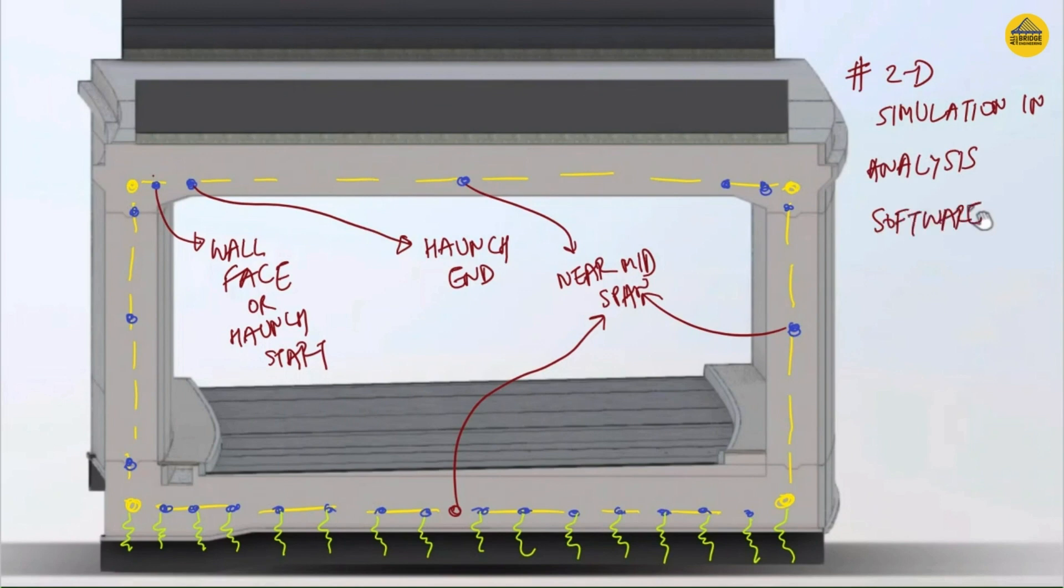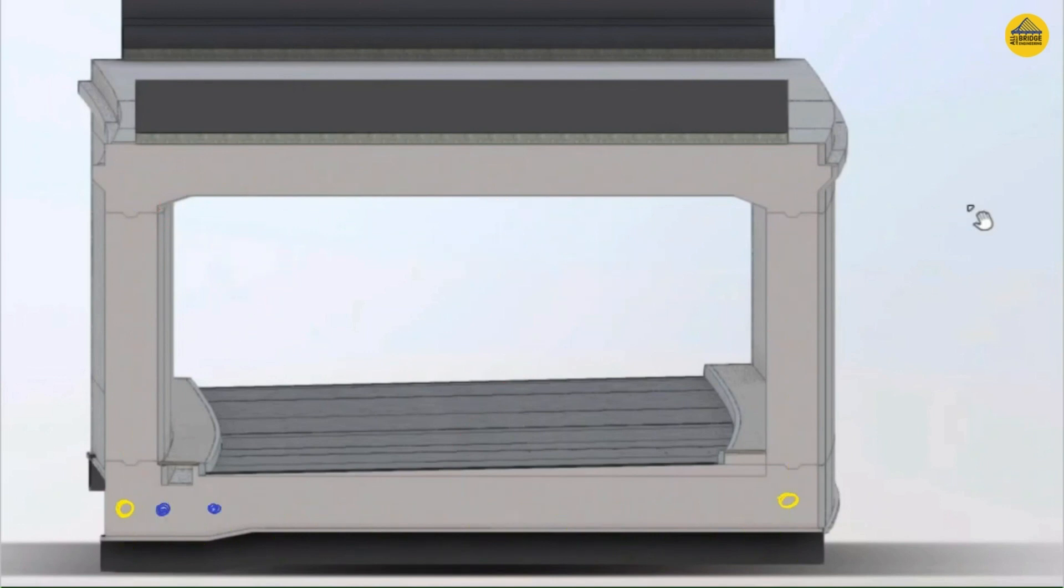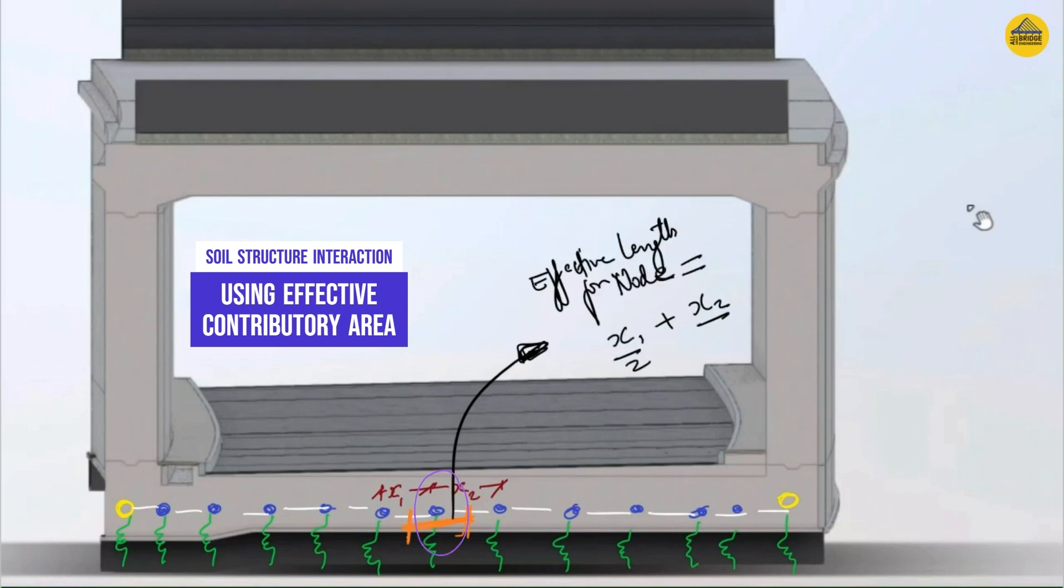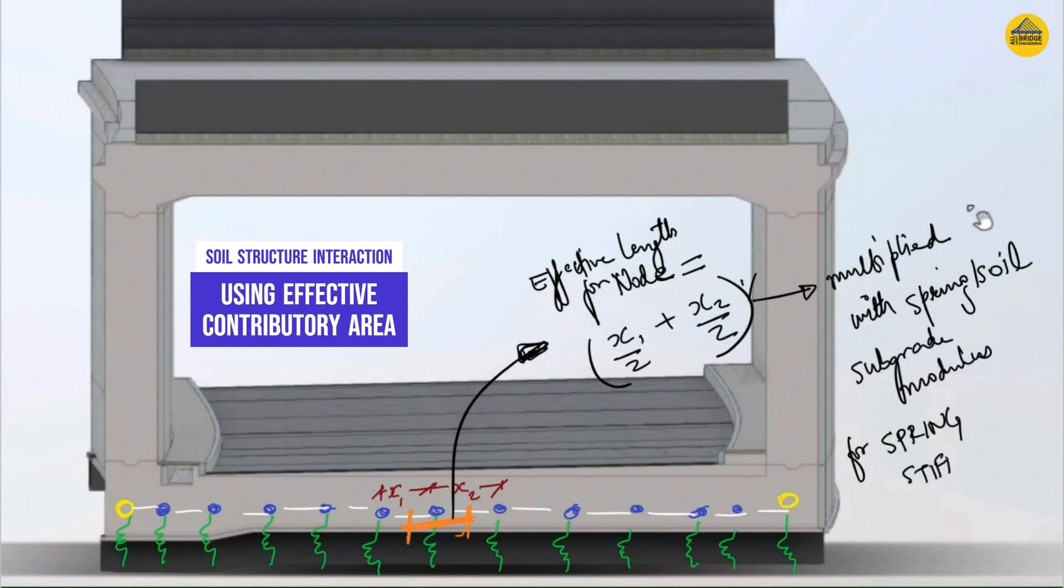Now it's very important to understand how soil structure interaction is taken care. This is taken care by providing spring stiffness values by making use of effective contributory area. Let's suppose we have a node under consideration which is circled, and the adjacent distances of the nodes are x1 and x2. Just sum them, divide them by 2. That will be the effective length for that very node. Multiply it with the width, which in our case will be 1 meter, and then the entire product has to be multiplied with the subgrade modulus of soil so that spring stiffnesses are obtained.